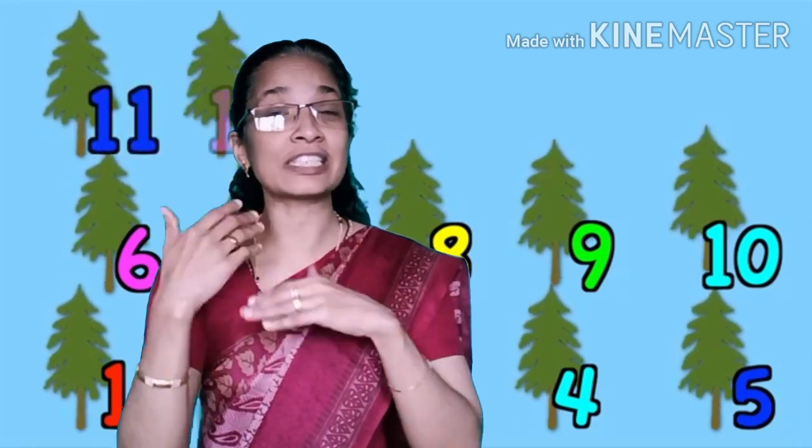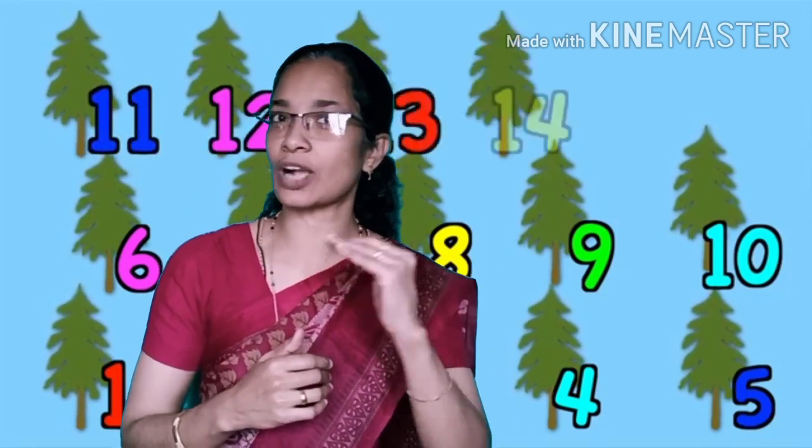We want to arrange the numbers from 1 to 12. Before we arrange the numbers, we want the smallest number. Do you know the smallest number? Before searching the smallest number, we want to count the numbers. So which one is the first number to count? 1. So my dears, in these numbers, 1 is the smallest number. Which one is the smallest number? 1.